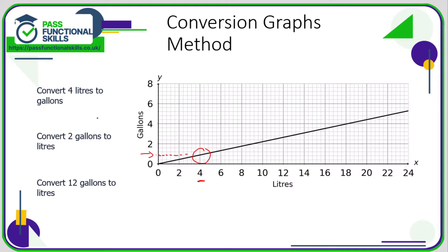So this point here is 0.8, so four liters is 0.8 gallons. In this next question we're converting gallons to liters.